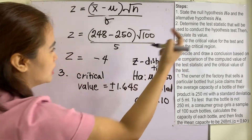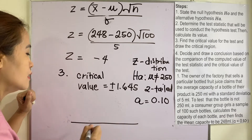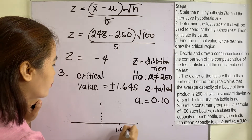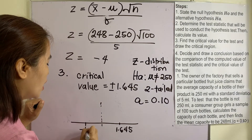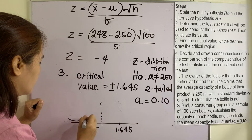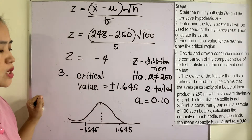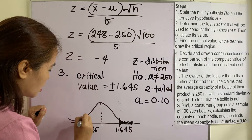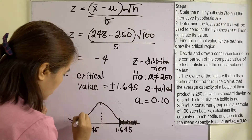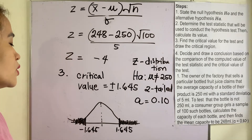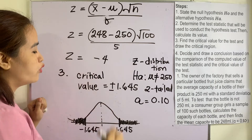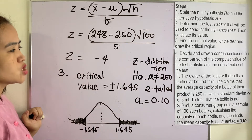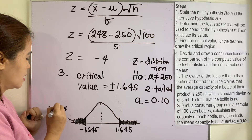Drawing the critical region: the center is at zero, with 1.645 on the right and negative 1.645 on the left. The rejection regions are on both tails. Where does Z equals negative 4 fall? It falls in the rejection region on the left side, somewhere beyond negative 1.645.